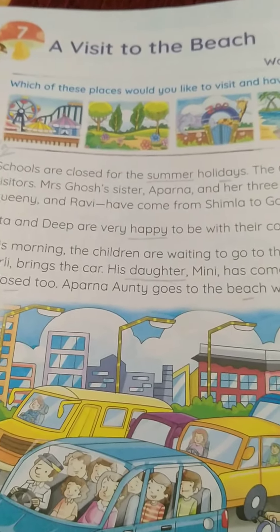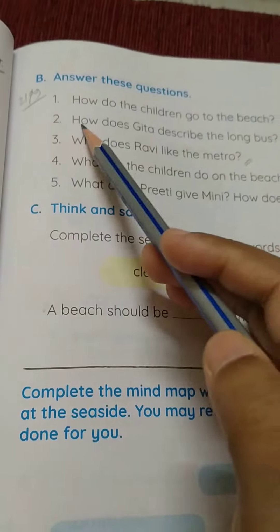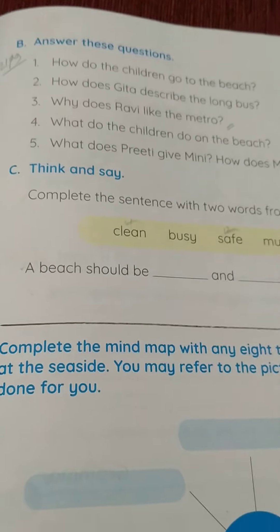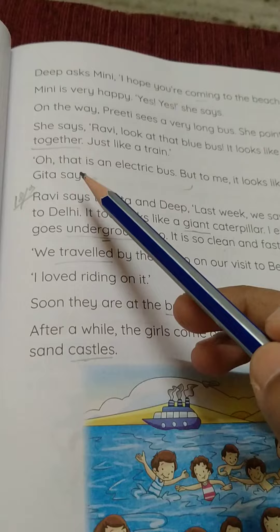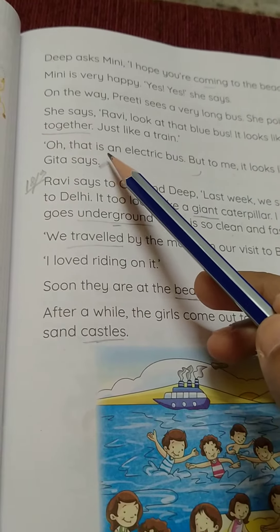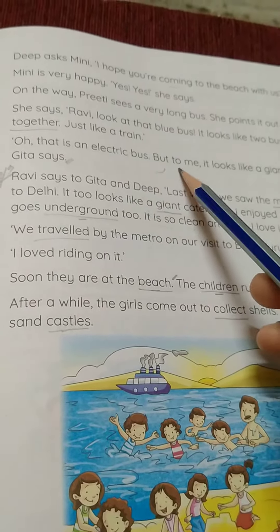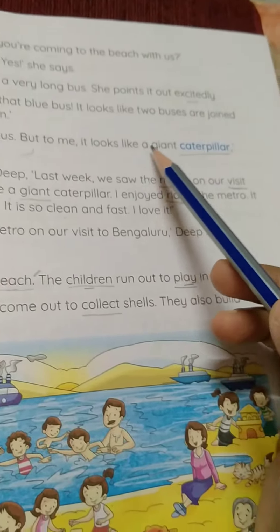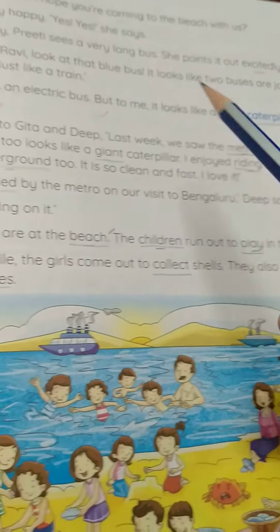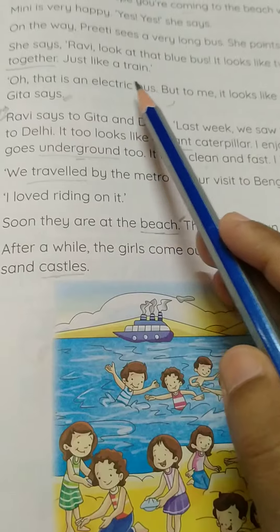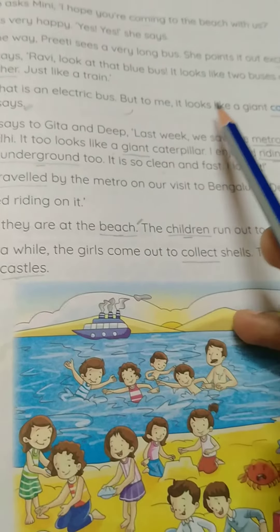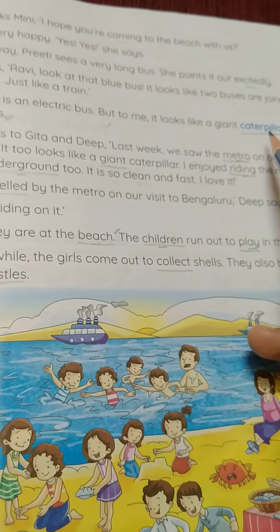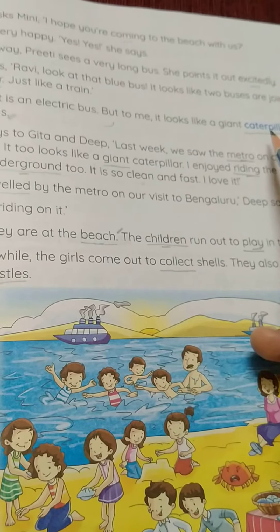The next question is: how does Gita describe the long bus? Gita says that it is an electric bus, but it looks like a giant caterpillar. This is your answer.